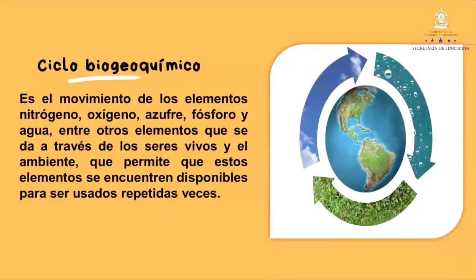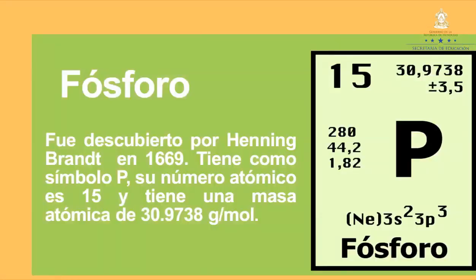Ciclo biogeoquímico: es el movimiento de los elementos nitrógeno, oxígeno, azufre, fósforo y agua, entre otros elementos, que se da a través de los seres vivos y el ambiente, y permite que estos elementos se encuentren disponibles para ser usados repetidas veces. Fósforo: fue descubierto por Annie Brandt en 1669, tiene como símbolo P, su número atómico es 15 y tiene una masa atómica de 30.97 g/mol.